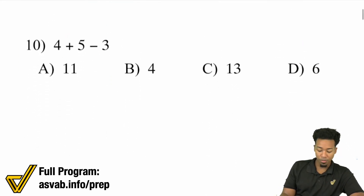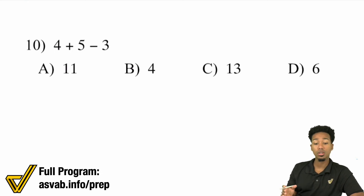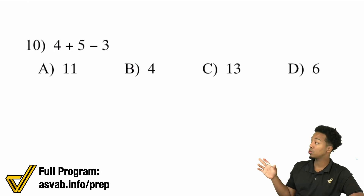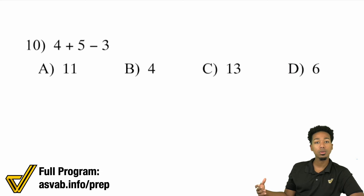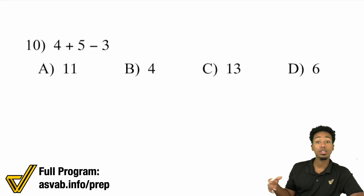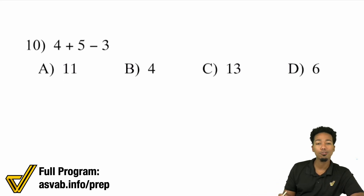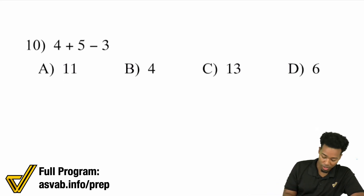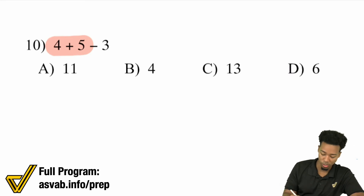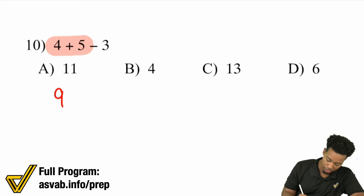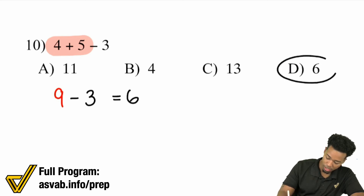4 plus 5 minus 3. What we're working on in this first video is two steps. In the next video it'll be two steps with negatives, then three steps, four steps, five, six steps and beyond. Get ready by starting here. So we have 4 plus 5 — just go left to right for addition and subtraction — that becomes 9. Then 9 minus 3 gives you 6. And that's D.